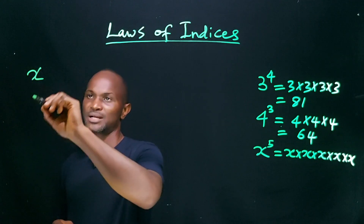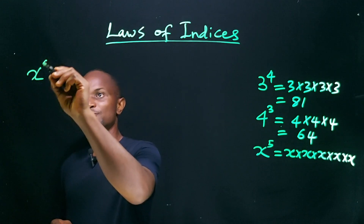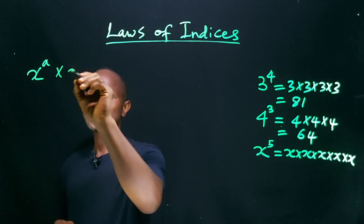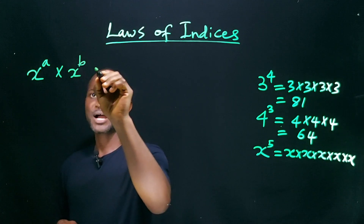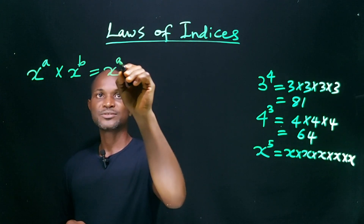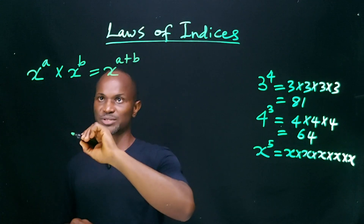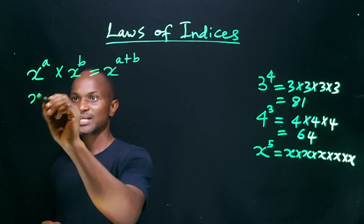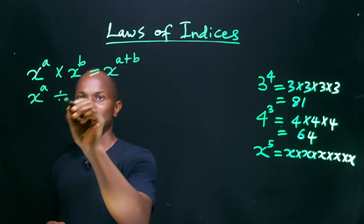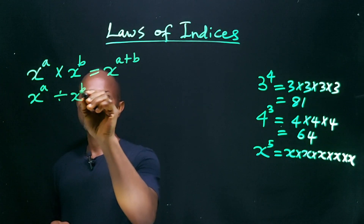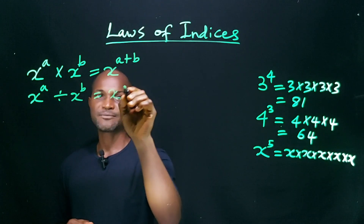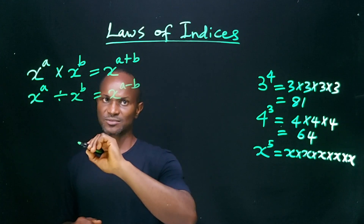We now state the laws. First: any number raised to power a, multiplied by the same number raised to power b, will be equal to that same number raised to power a plus b. Second: any number raised to power a, divided by that same number raised to power b, will be equal to that same number raised to power a minus b.